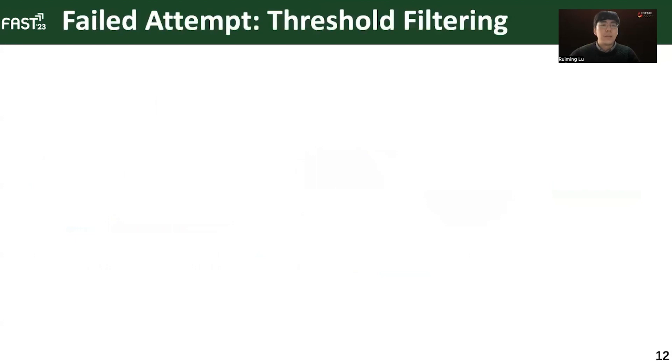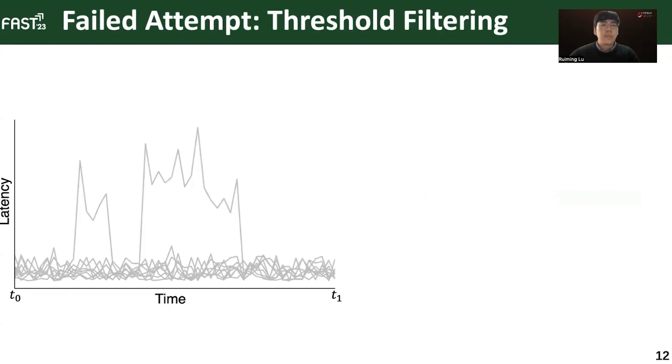Our first attempt is the threshold filtering approach. Since fail-slow drives usually have outstandingly high latency, we start by checking the latency time series in one storage node, from time t0 to t1. Every gray line corresponds to the latency variations of every drive in this node. As we can see, in this figure, there are two latency spikes that may be an artifact of fail-slow.